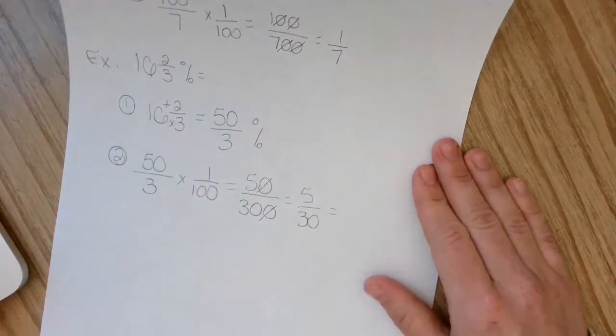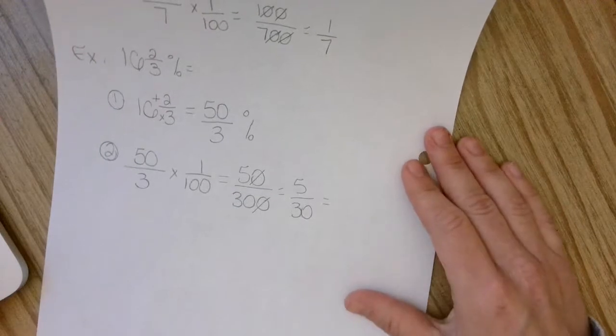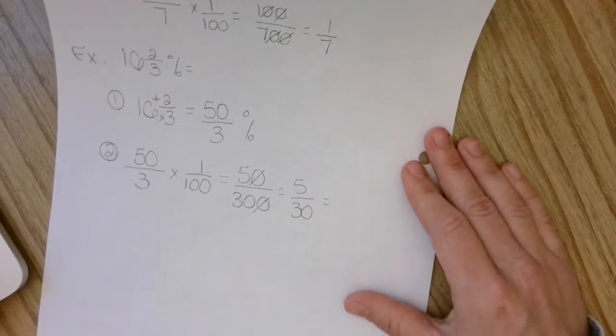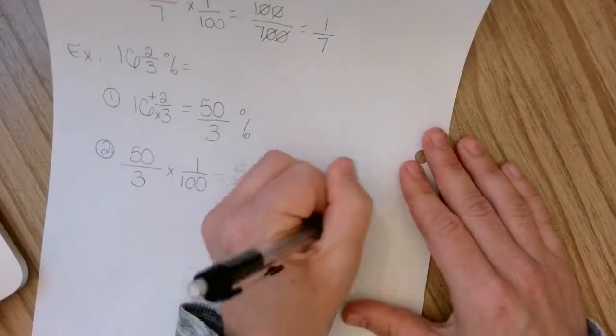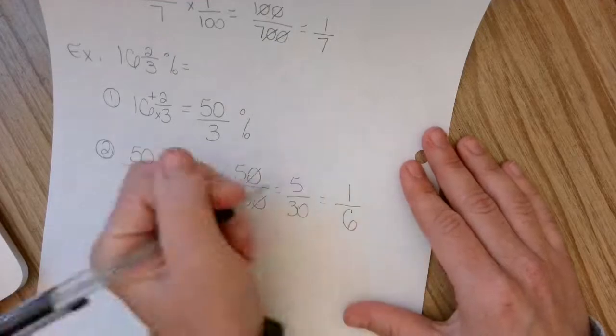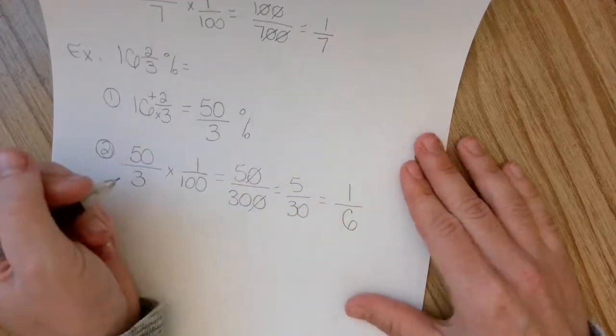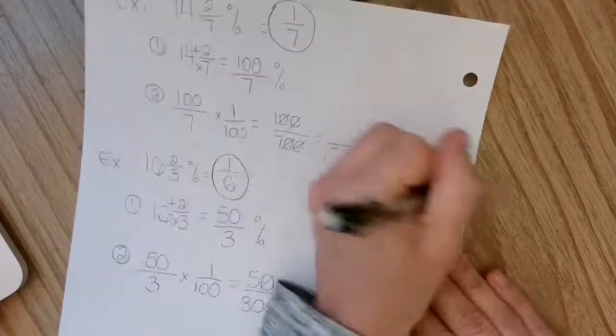These two can cancel out. So then I'm left with 5 thirtieth. But then that can reduce more. I can use 5 as my GCF or my greatest common factor. So 5 divided by 5 is 1, and then 30 divided by 5 is 6. So that reduces down to 1 sixth. And that is my answer.